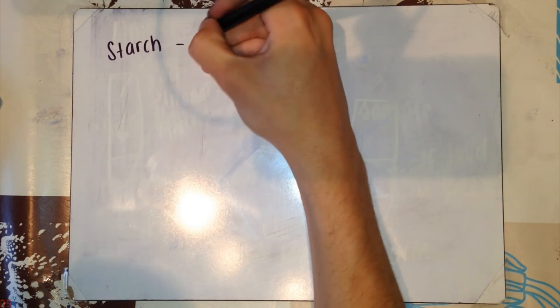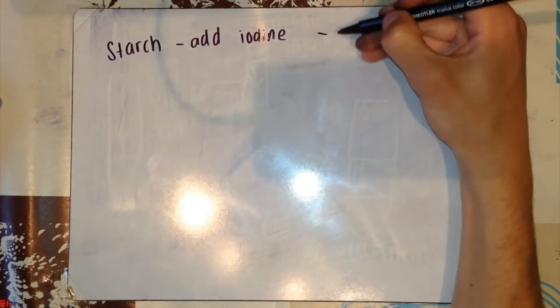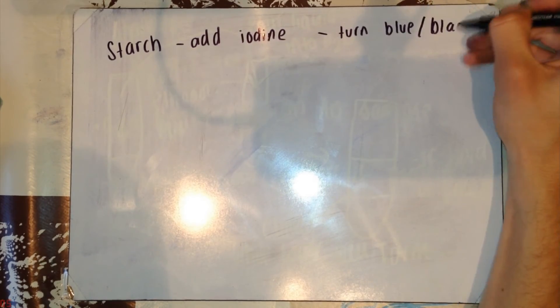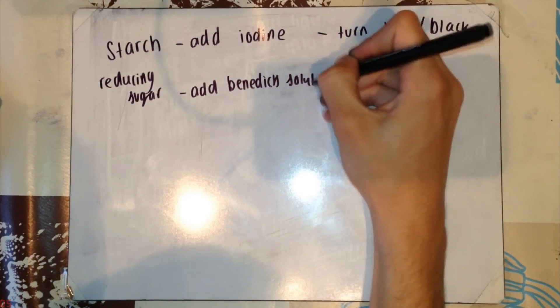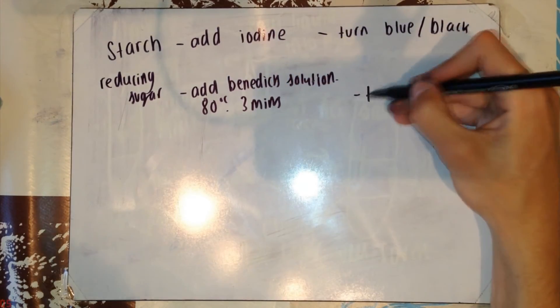And finally, to remember the starch test. Add iodine. If starch is present, it will turn into a bluey-black color. For reducing sugar, add Benedict's solution. If a reducing sugar is present, it should turn to orange or red.